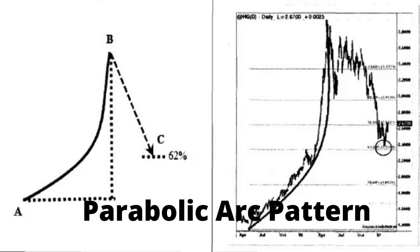Parabolic arc patterns are very rare, but occur in mega-bull trends. These patterns form in bull markets where irrational buying by the public generates a strong rally, as prices rise almost vertically. Examples include the internet boom in 2000 and the metals boom in 2005 to 2006.